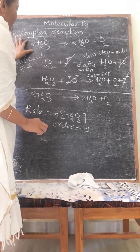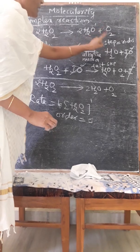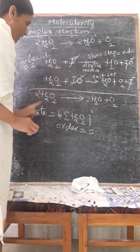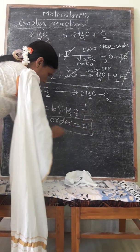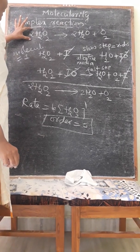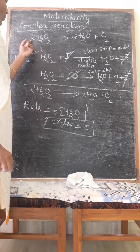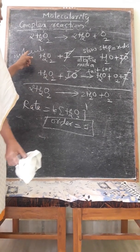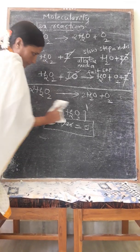The reaction mechanism shows that the slow step determines the rate of the reaction. In this case, the reacting species in the slow step is 1, therefore molecularity is 1. The slow step determines rate: rate = k[H2O2]¹, hence the order is 1. So, by looking at the slow step, you can conclude molecularity is 1 (not 2) and order is 1 (not 2), because this is determined according to experimental results and reaction mechanism. This step is also called an elementary reaction, indicating the number of reacting species involved.